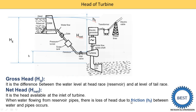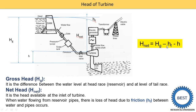When water flows from the reservoir through the pipe, there is a loss of head due to friction, known as the friction head Hf, between the water and the pipe walls. So the equation of H_net is: H_net = Hg minus Hf minus H.